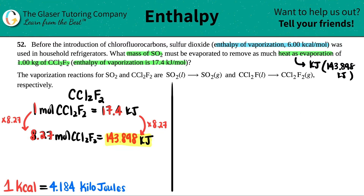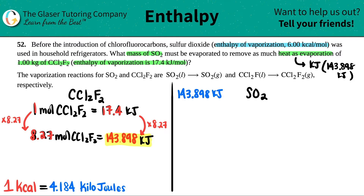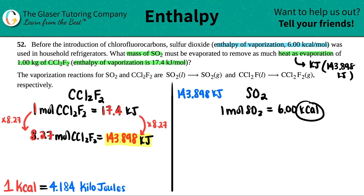Now I know I need 143.898 kilojoules. For sulfur dioxide, the enthalpy of vaporization was 6.00 kilocalories per mole, so for every one mole of SO2 I get out 6.00 kilocalories of heat. Kilocalories are basically capital-C Calories — the same calories on nutritional labels. Here's the problem: I have kilojoules on one side and kilocalories on the other. They're both units of heat, but different units, so I need to convert one into the other.